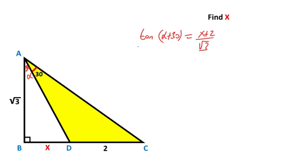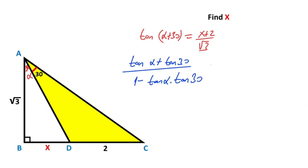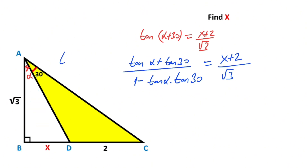We know the expansion: tangent(alpha + 30°) equals (tan(alpha) + tan(30°)) over (1 − tan(alpha)·tan(30°)), which equals (x + 2)/root 3. If you focus on triangle ABD, tangent(alpha) equals x over root 3. Moreover, tangent(30°) equals 1 over root 3.